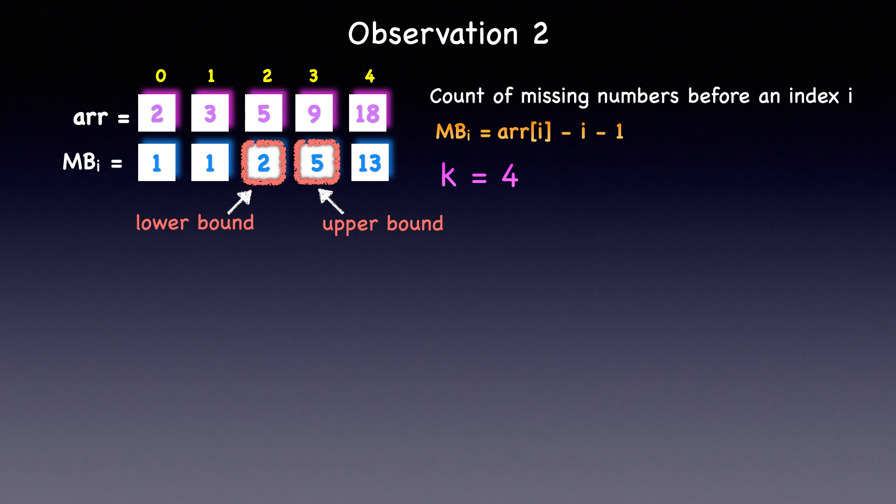But once we've identified the lower and upper bounds of numbers between which the kth missing number is situated, how would we then determine the kth missing number within this range? Basically, we need to determine that from the element at lower bound index, how far out should we go to find the kth missing number? Well, essentially, we need to go k minus the count of numbers missing before the element at lower bound index.